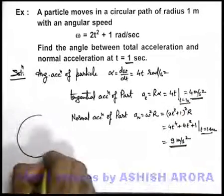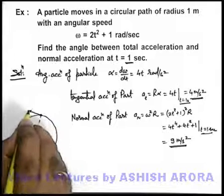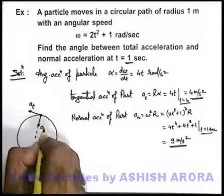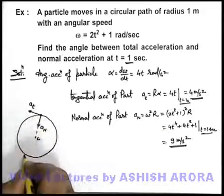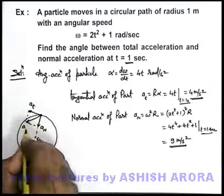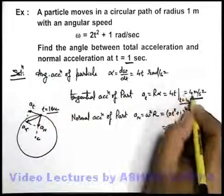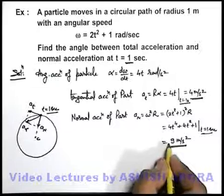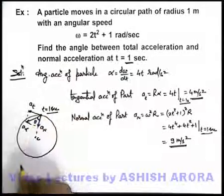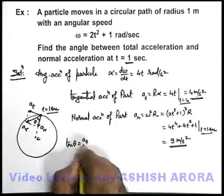If we pictorize the situation, say this is the circular path in which the particle is moving. The tangential acceleration will be along the tangent of the circle, and normal acceleration is always directed toward the center of the circle. The resultant of tangential and normal acceleration is the total acceleration. We are required to find the angle theta between total and normal acceleration, and from this picture we can directly state that tan theta equals aₜ divided by aₙ.